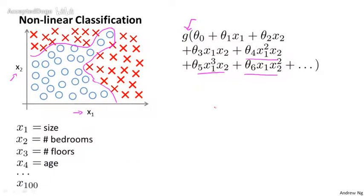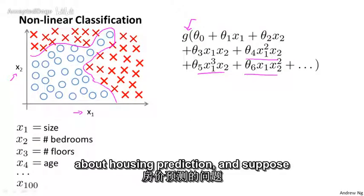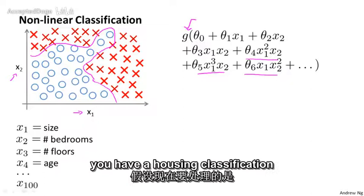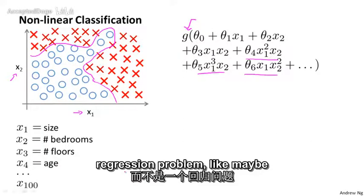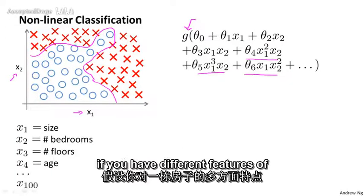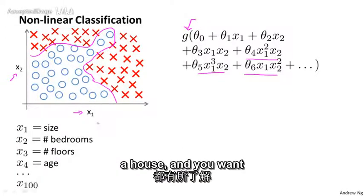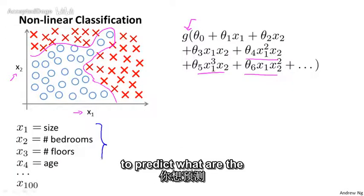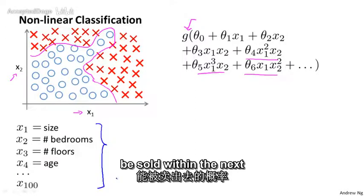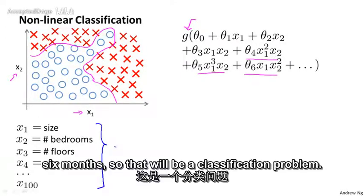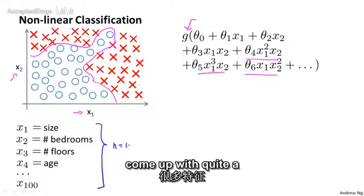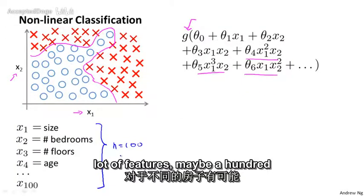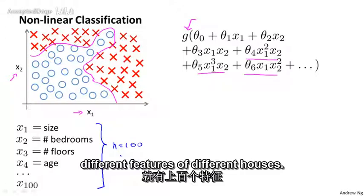We've been talking for a while about housing prediction. Suppose you had a housing classification problem rather than a regression problem. Like maybe if you have different features of a house and you want to predict the odds that a house will be sold within the next six months. That would be a classification problem. As we saw, we can come up with quite a lot of features, maybe a hundred different features of different houses.